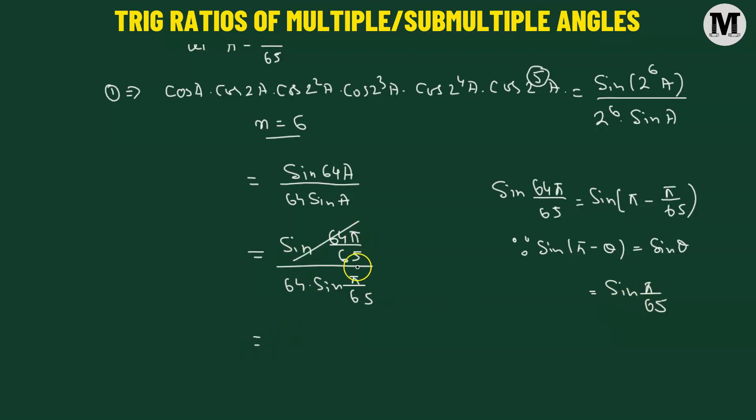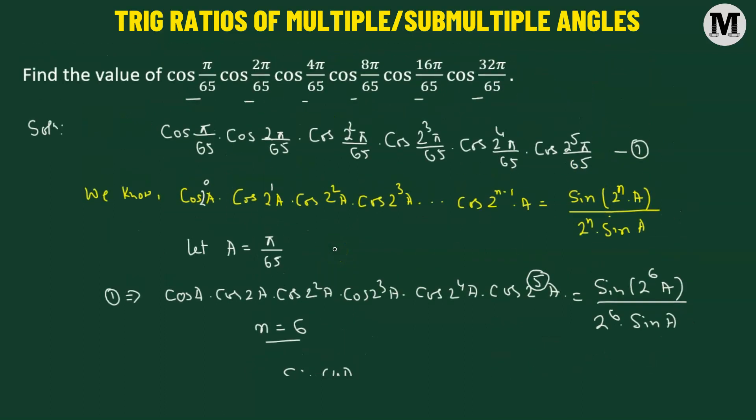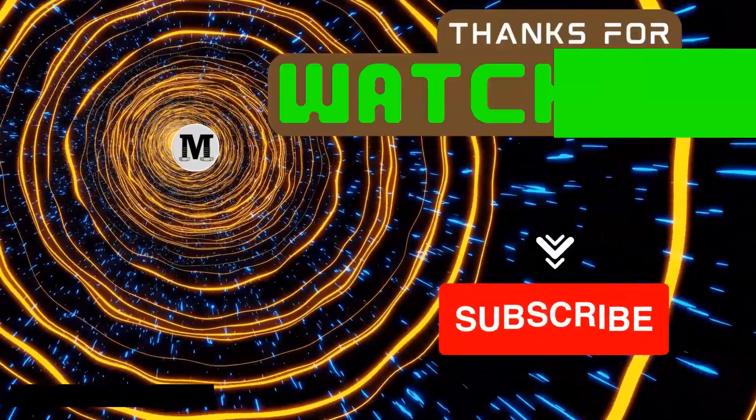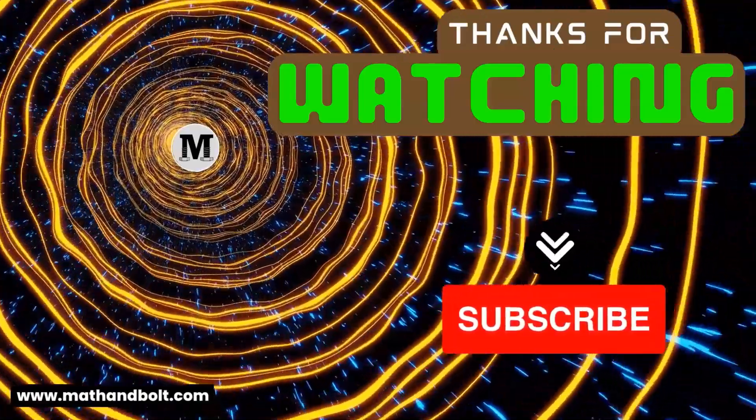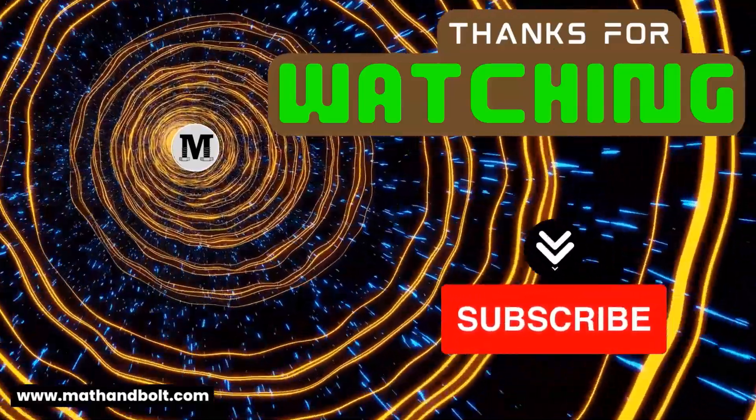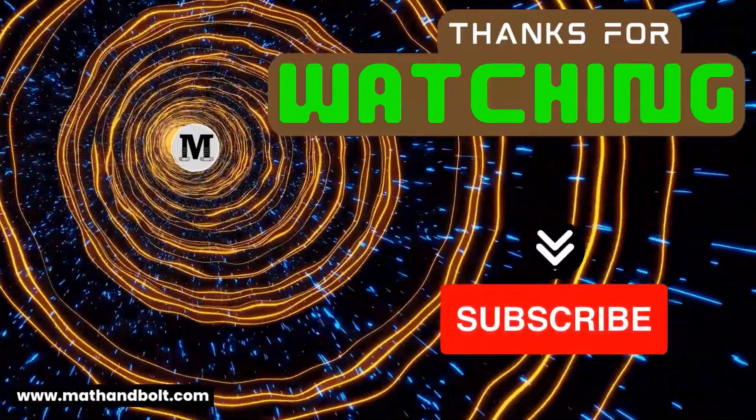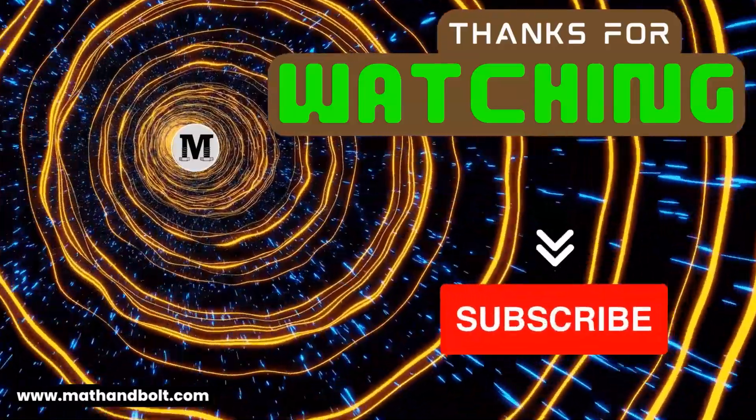We can factor out the numerator and the denominator, leaving us with 1 over 64. So that is going to be the value of the given trig expression. It amounts to 1 over 64.